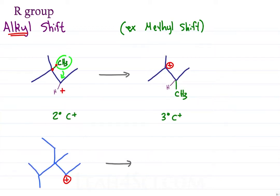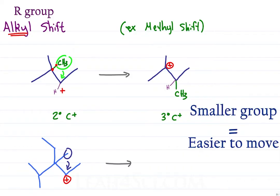What if you're looking to do an alkyl shift and you find yourself with different options? In this case, the quaternary carbon has a methyl group, an ethyl group, and an isopropyl group. The smaller the group, the easier it is to move. In this case, the methyl group moves over, once again giving me a more substituted tertiary carbocation.